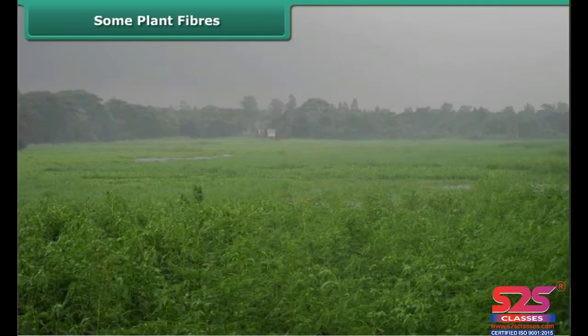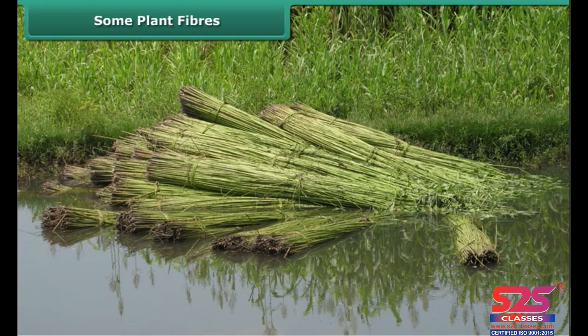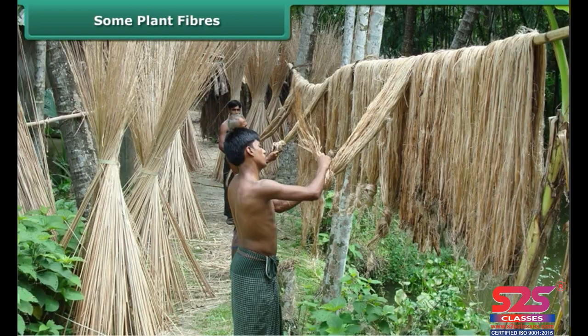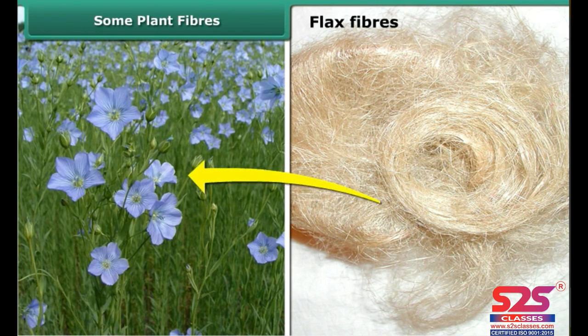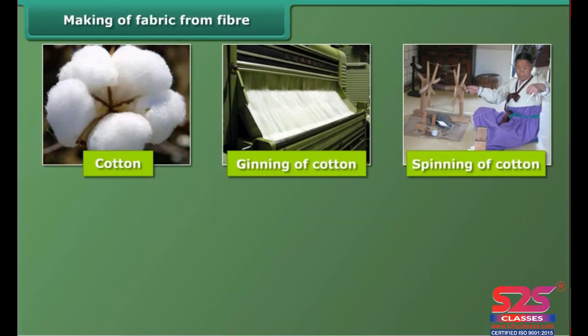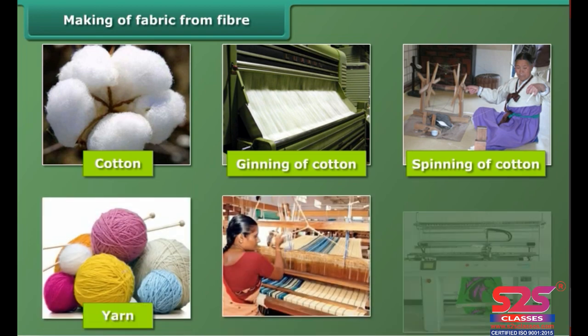Jute fiber is obtained from the stem of the jute plant. It is cultivated during the rainy season. The stems of harvested plants are immersed in water for a few days, then the stems rot and fibers are separated by hand. Flax fibers are also obtained from the stems of the plant and are used mainly to make linen.